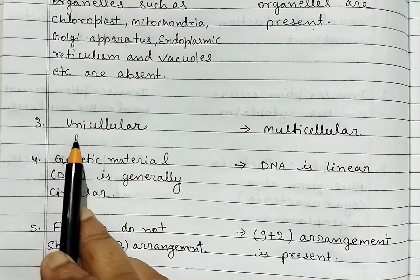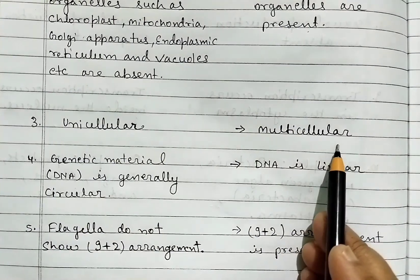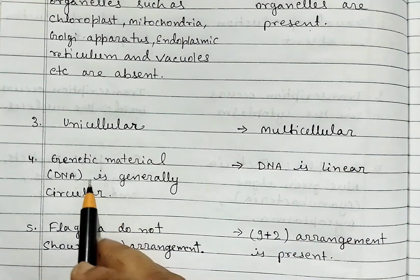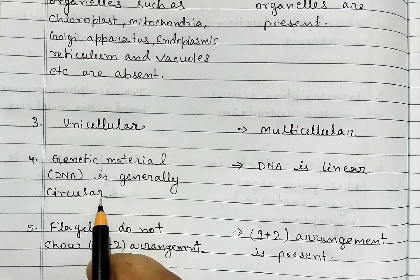In prokaryotic cell, genetic material, that is DNA, is generally circular. In eukaryotic cell, DNA is linear.